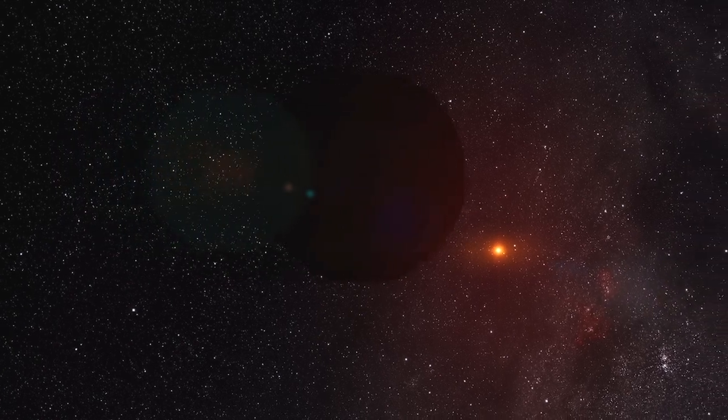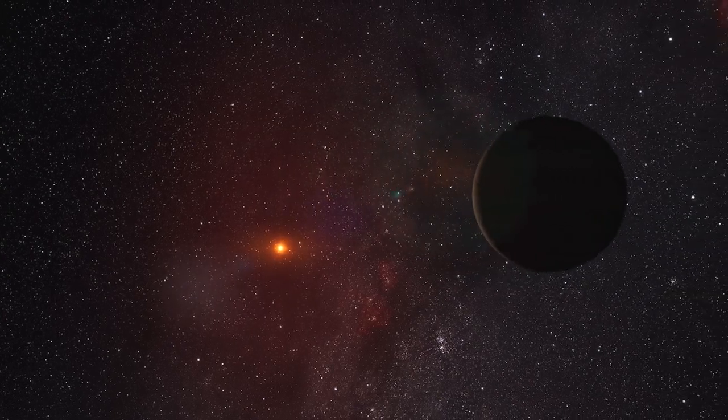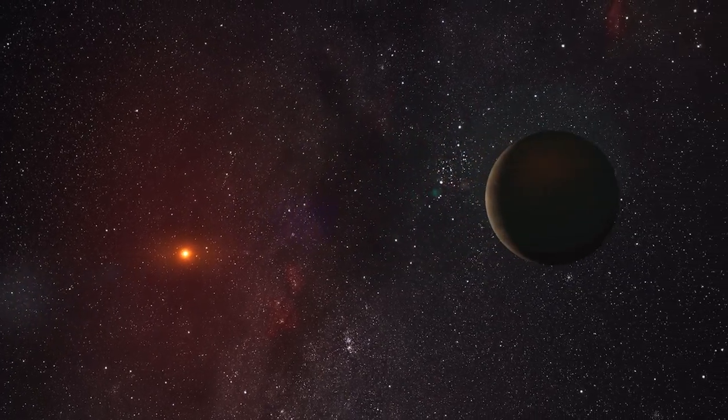And in some cases, you can even capture exoplanets on camera. In 2004, NACO, the adaptive optics camera on the Very Large Telescope, took the first image ever of an exoplanet. The red dot in this image is a giant planet orbiting a brown dwarf star.